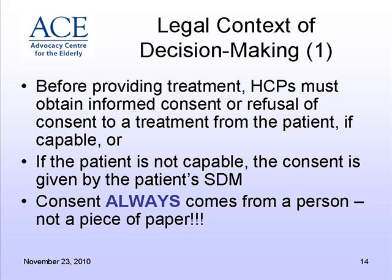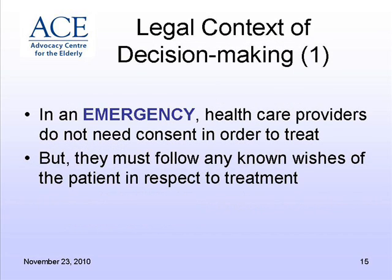Before providing a treatment, a health care practitioner has to get informed consent or refusal of treatment from the patient if they're capable. If the person is not capable, then you have to get consent from the substitute. Consent always comes from a person, not a piece of paper — you can't say someone signed a level of care directive when they were capable and just look to that. You have to actually go to the substitute if the person is not capable. The only exception is an emergency: if someone requires CPR, you can't be phoning up the family trying to round up substitute consent.